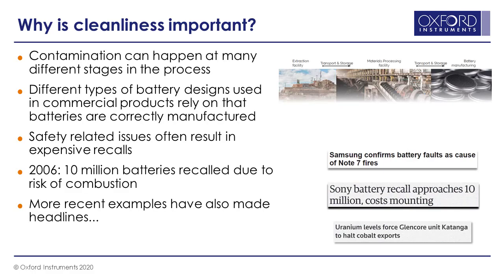Contamination by unwanted particles can happen at any different stage in the process, all the way from starting at the mine to the production of the final product. So it doesn't have to happen during the mixing of the particles to form, for instance, the cathode material itself.